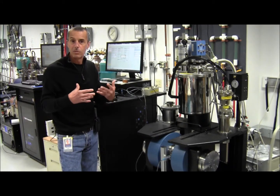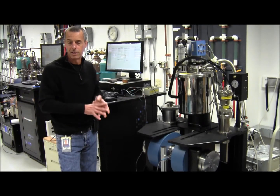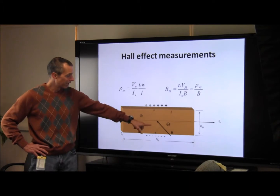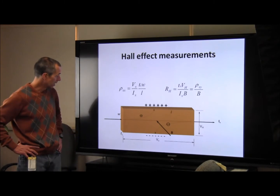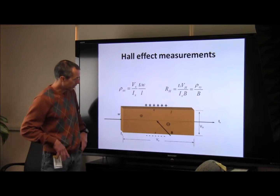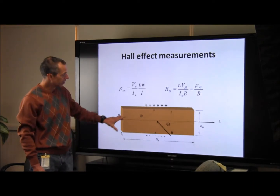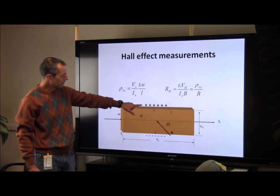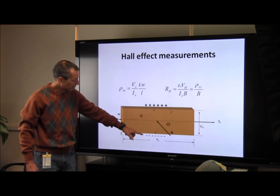In a moment, we're going to look at the differences between AC and DC field Hall Effect measurement techniques. In a Hall Effect measurement, an applied magnetic field B is oriented perpendicular to the surface of the sample, and a current I is injected into the sample. The charge carriers experience a Lorentz force, which causes them to migrate along the paths shown here, such that you have a net accumulation of positive charge on one side and negative charge on the other side. This potential difference is referred to as the Hall voltage.